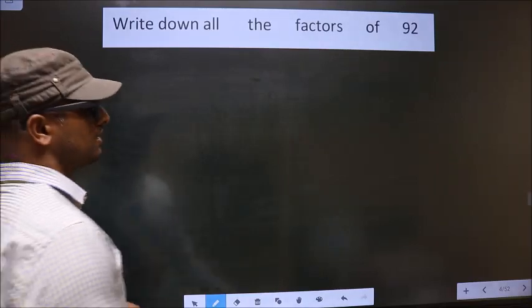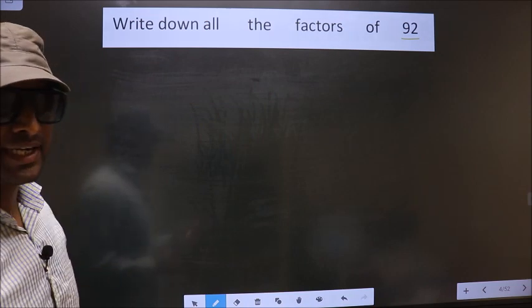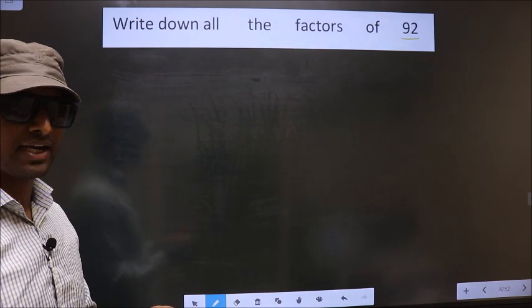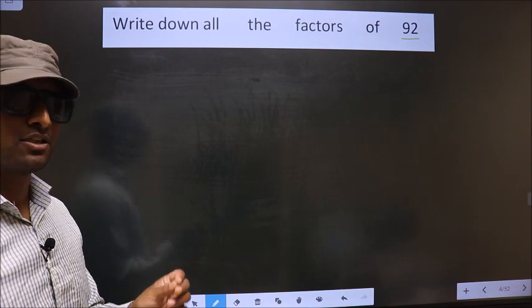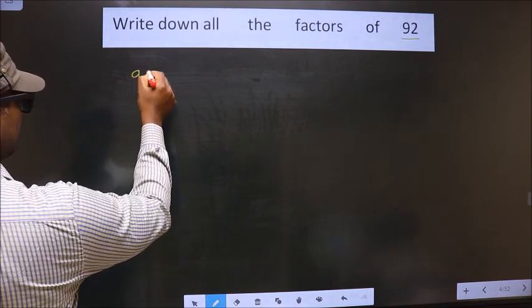Write down all the factors of 92. To write all the factors of 92, first we should do the prime factorization of it. So let us do so, 92.